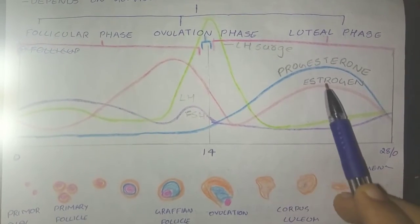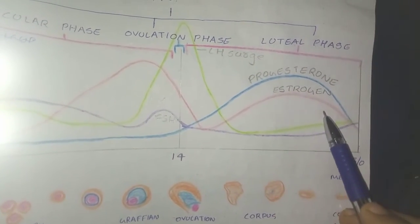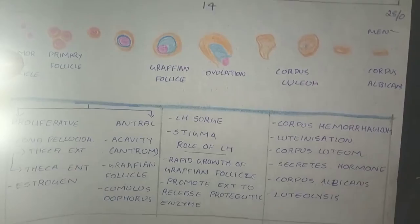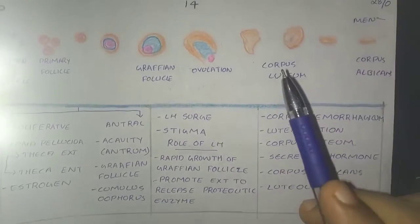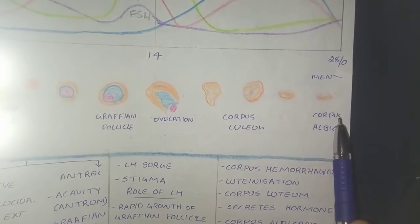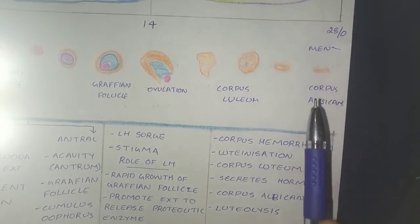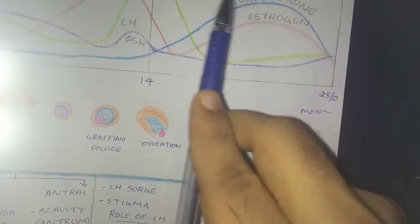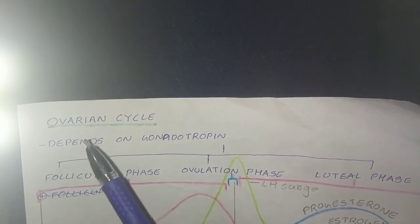Now on the 24th day, if fertilization doesn't occur, it causes the degeneration of corpus luteum into corpus albicans. This is called luteolysis, which is shown here. And that's for the luteal phase. That's all for ovarian cycle.